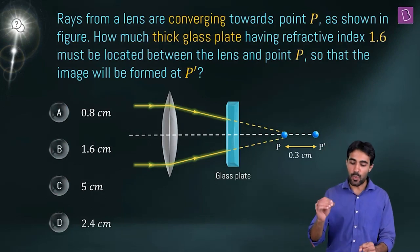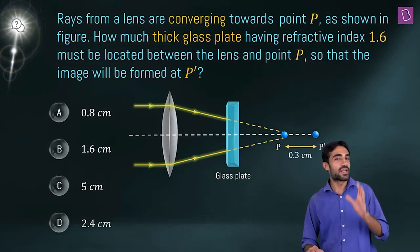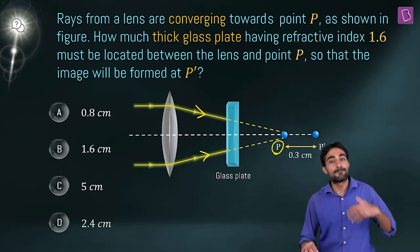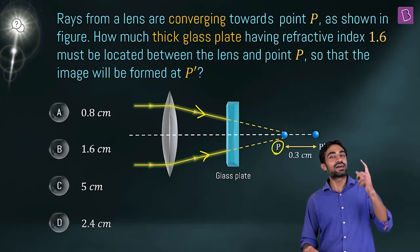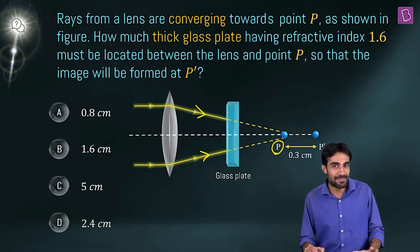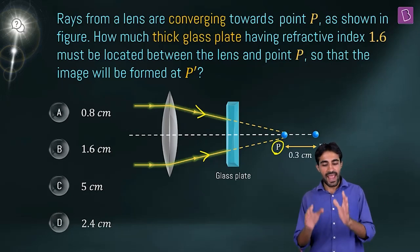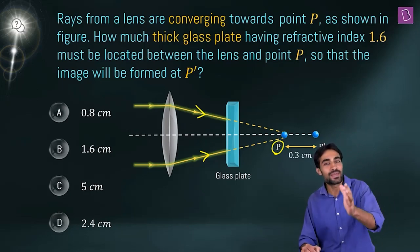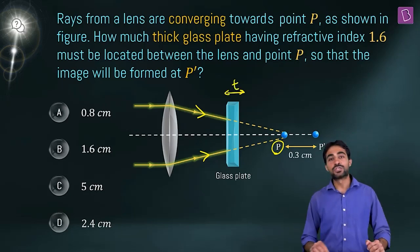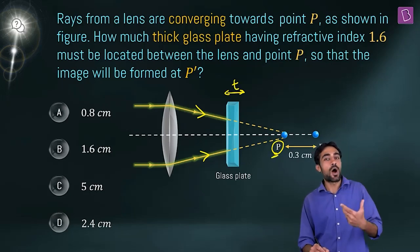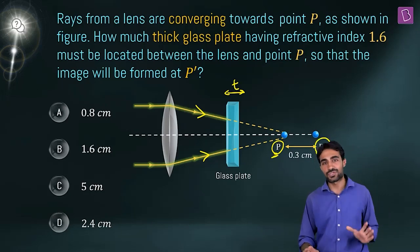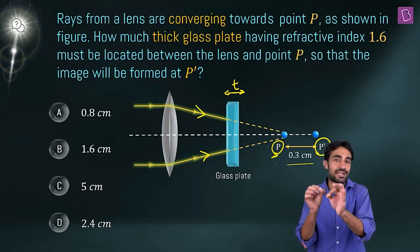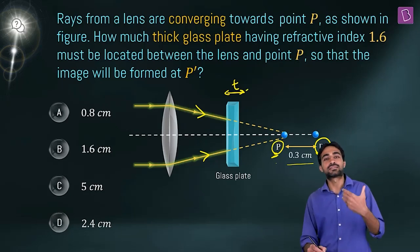Rays from a lens are converging towards point P as shown in the figure. We can see some rays which are refracted from this lens, and they appear to converge at point P. But if we place a glass slab, something entirely different is going to happen. How thick a glass plate having refractive index 1.6 must be located between the lens and point P so that the image will be formed at P'?